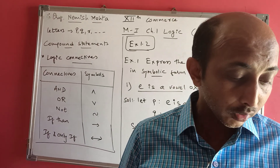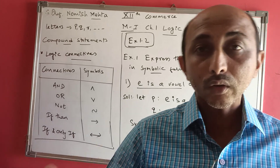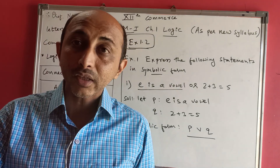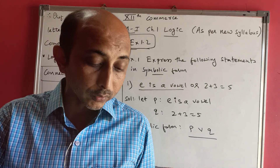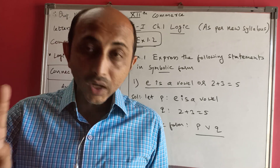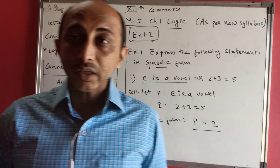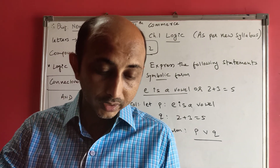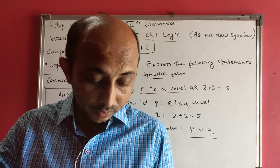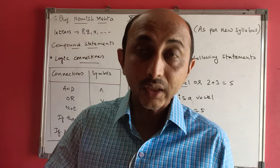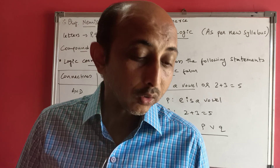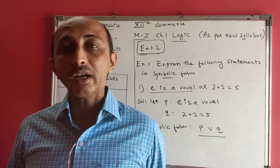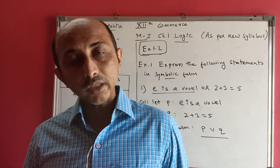Likewise, solve the remaining problems. We will see the truth value in the next lecture. For now, complete Exercise 1.1 remaining sums and Exercise 1.2 Example 1 - there are 5 sums, I solved one, you solve the rest. In the next lecture, we will move further - truth tables will also come, and I will teach everything together starting with truth tables and then Example 2 of Exercise 1.2. Take care, keep studying. See you, bye!